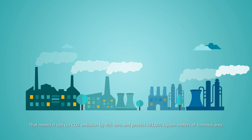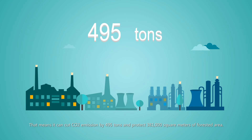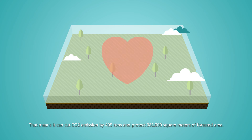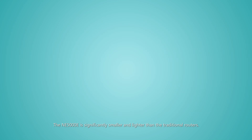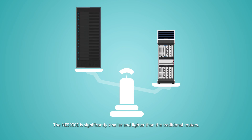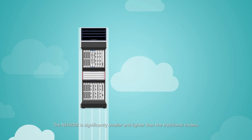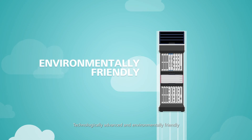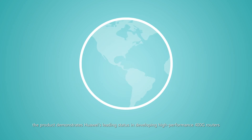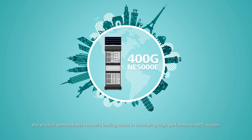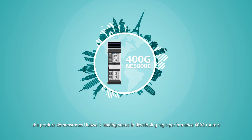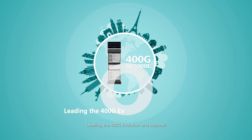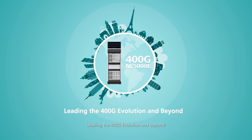That means it can cut carbon dioxide emissions by 495 tons and protect 381,000 m² of forested area. The NE5000E is significantly smaller and lighter than traditional routers. Technologically advanced and environmentally friendly, the product demonstrates Huawei's leading status in developing high-performance 400GB routers, leading the 400GB evolution and beyond.